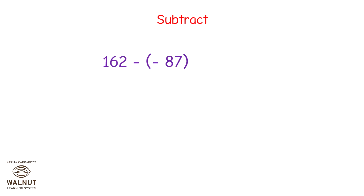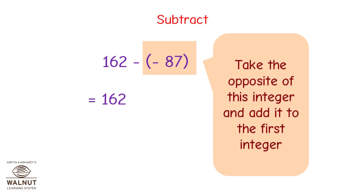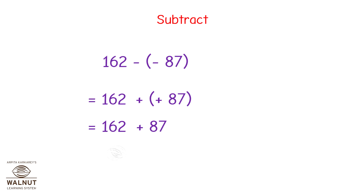Let us do this subtraction problem. We have 162 minus negative 87. We write the first integer as it is, then we take the opposite of the second integer and add it to the first. Now we solve: this becomes 162 plus 87, which is equal to 249.